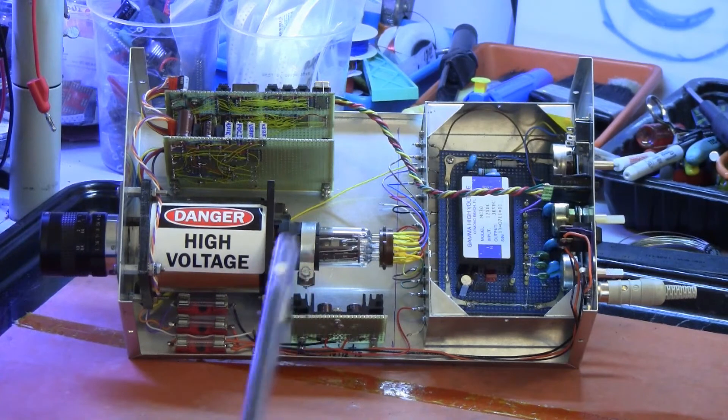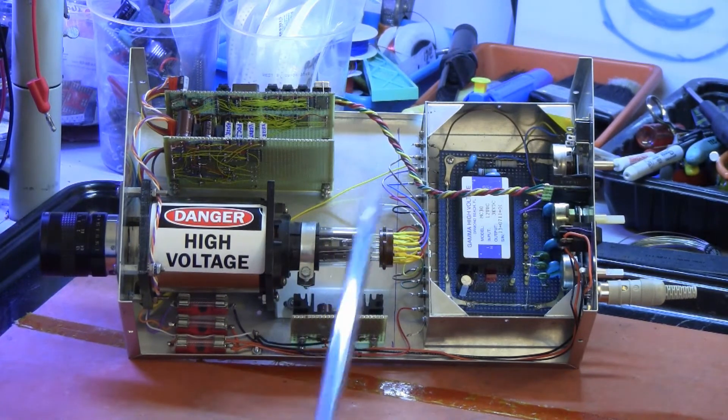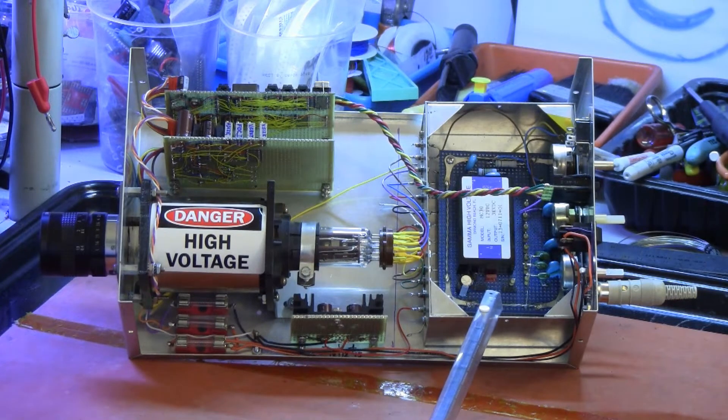That leaves now to bring up the image dissector tube, the high voltage, and the high voltage power supply.